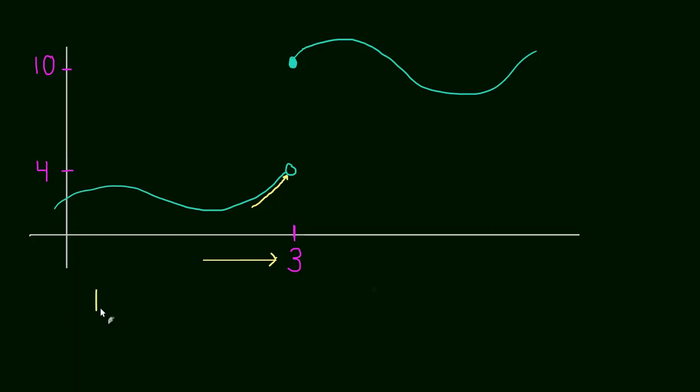So if we wanted to indicate that with notation, we would write the limit as x approaches 3, and we'd write a little negative superscript, just like that, of f of x, our function here, and this would be equal to 4.